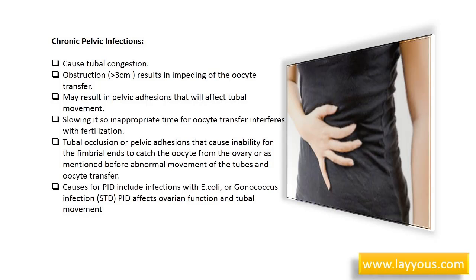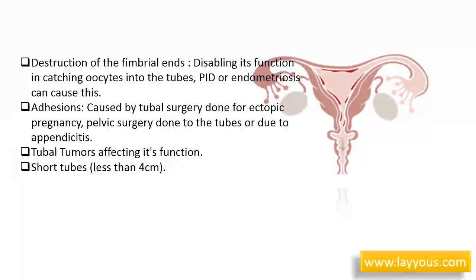Pelvic inflammatory disease will result in tubal occlusion or pelvic adhesions, causing inability for the fimbriae to catch the oocyte from the ovary, or abnormal movement of the tubes and oocyte transfer. Causes for PID include infections with E. coli or gonococcus. STD-related PID affects ovarian function and tubal movement, and may be severe enough to destroy the tubes, requiring surgical resection. Destruction of the fimbriae disabling its function can also be caused by PID or endometriosis.